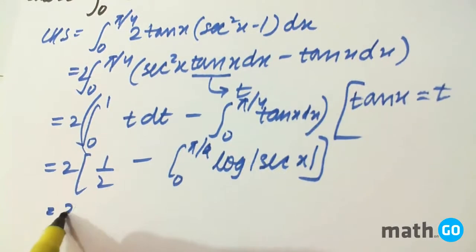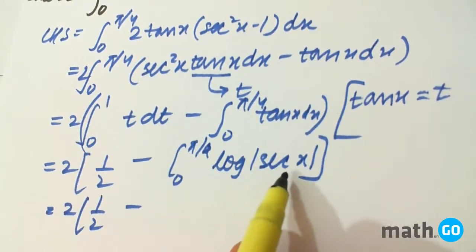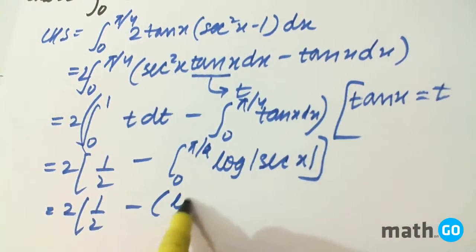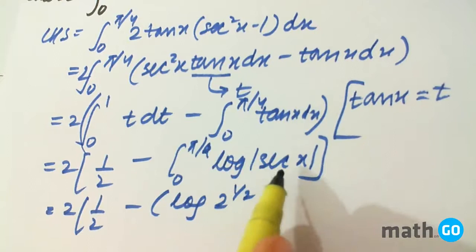So finally, putting the limits we will get 1/2 minus sec of π/4 is √2, so it is log of 2 to the power 1/2 minus log of sec 0 is 1.